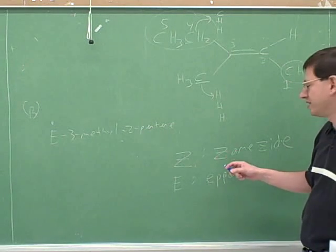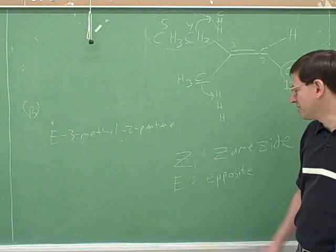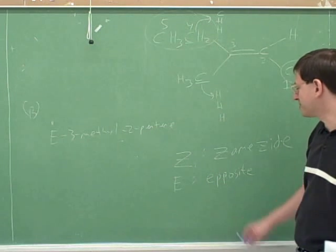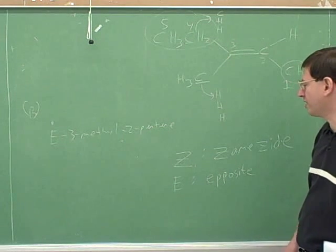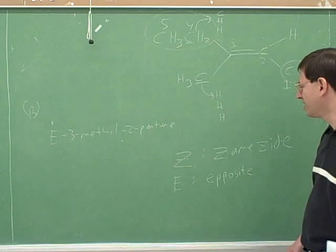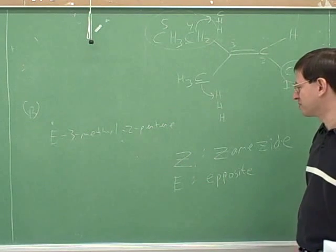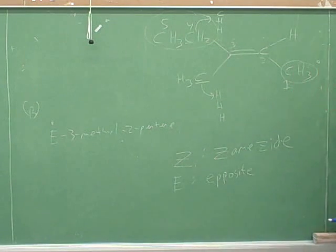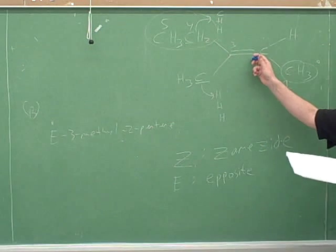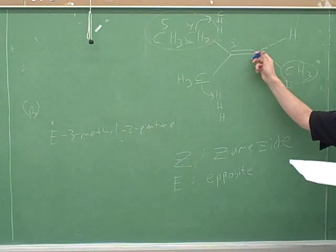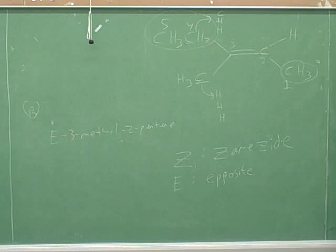All right. Of course, you only really need one memory aid, but I find it's fun to have two. All right. So Z means that the two high priorities are on the same side, and E means that the two high priorities are on opposite sides. A lot of people have a really hard time remembering which is Z and which is E, but with this mnemonic, it becomes pretty easy to remember it. Okay. This is an important thing to make sure you got down, you're pretty sure to see exam problems on this on the test. For sure. Okay.